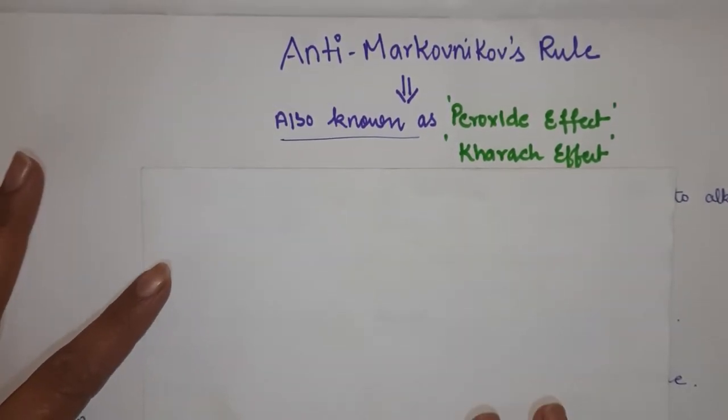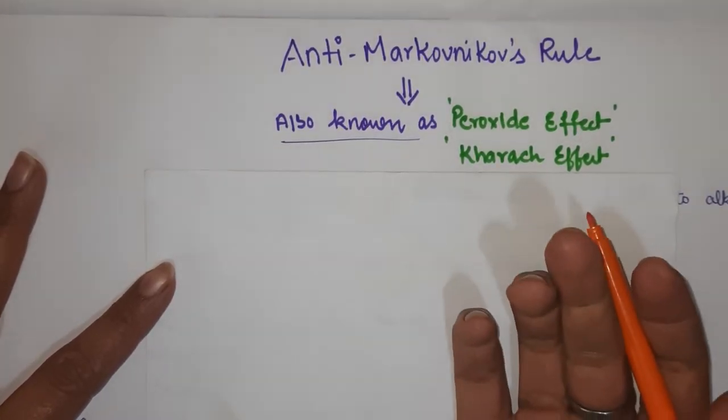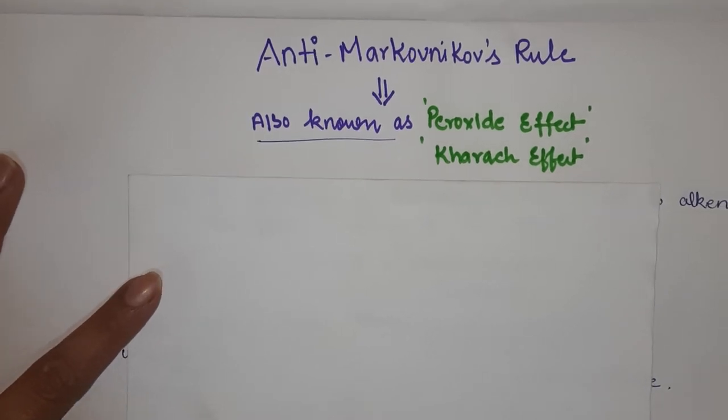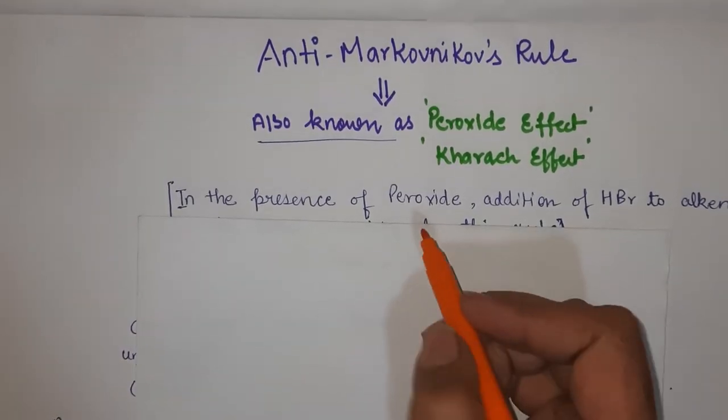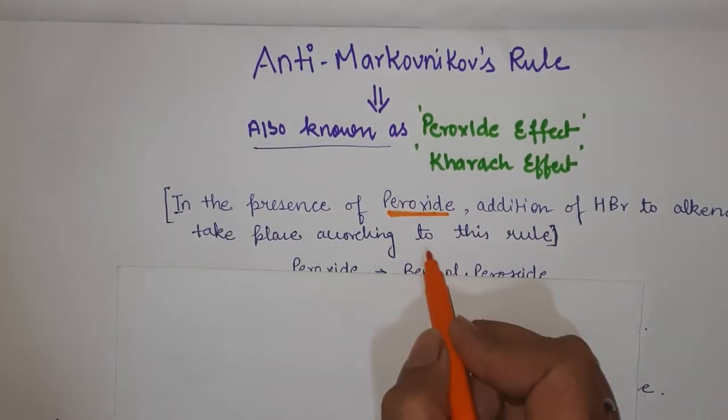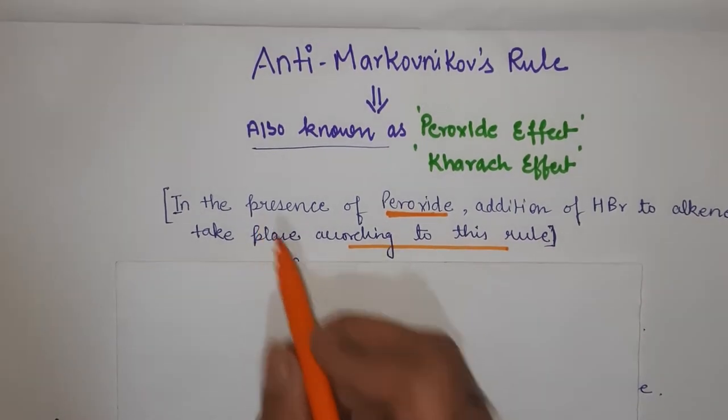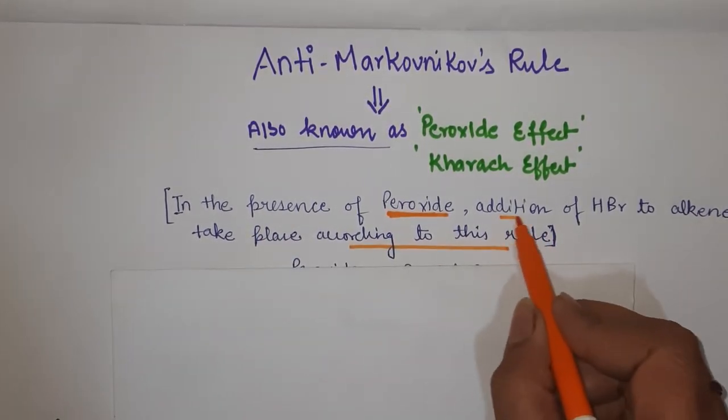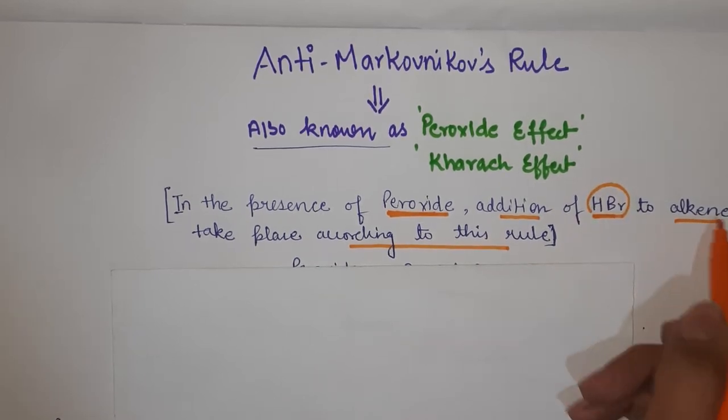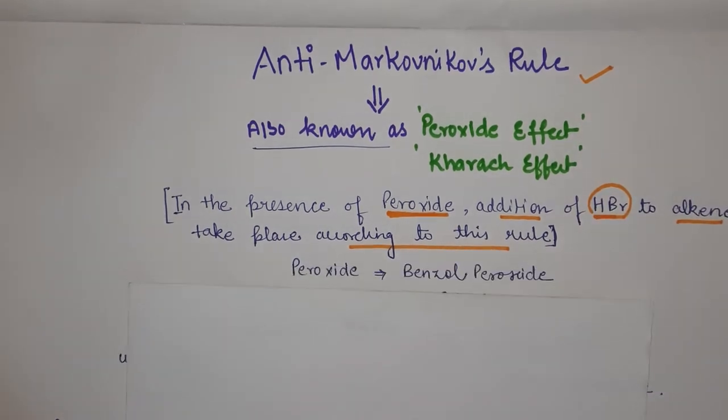Now let's discuss why we are studying Anti-Markovnikov's Rule. During the addition reaction of alkenes, which is in your NCERT Class 11th, if there is presence of a peroxide then this rule comes into picture. In the presence of peroxide, if addition of HBr is taking place to the alkene, we need to apply this rule.